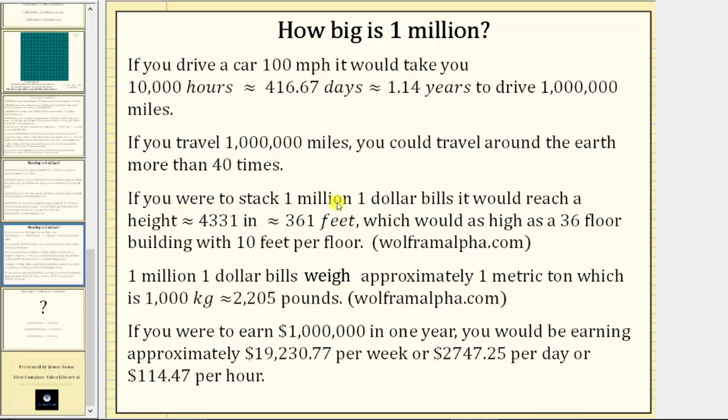If you were to stack 1 million one dollar bills, it would reach a height of approximately 4,331 inches, which is approximately 361 feet, which would be as high as a 36-floor building with 10 feet per floor. One million one dollar bills weigh approximately one metric ton, which is 1,000 kilograms, or approximately 2,205 pounds.